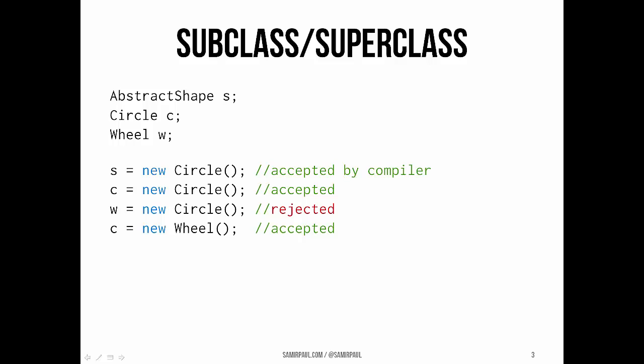Take a look at this code segment which illustrates this idea. We can see we declare three variables: an abstract shape, a circle, and a wheel. Then we're creating and instantiating a bunch of circles and a wheel, and pointing those variables at them.